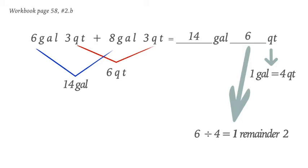This one is added to our gallon, which will turn 14 into 15. And then the quarts will not be six anymore because we divided that already, and it will turn into our remainder two.